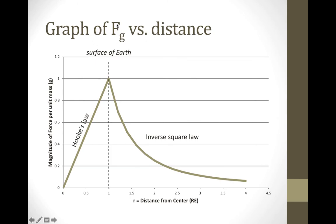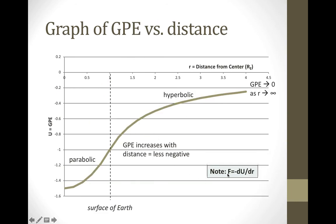We can draw a graph of the force of gravity versus distance. Inside the Earth it follows Hooke's law, so it's a straight line. At the surface of the Earth the force reaches its maximum, and once above the surface, the force falls off as the inverse square. Using the relationship that force equals minus the derivative of potential energy, we can look at the potential energy of the Earth as a function of distance. Inside, where we have Hooke's law, the potential energy is parabolic — a piece of a parabolic arc. Above the surface it follows off as essentially a hyperbola, a 1 over r relationship.